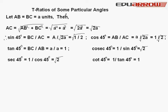We will study trigonometric ratios for 45 degree angle. Sin 45 degree is equal to 1 by root 2. Cos 45 degree is also equal to 1 by root 2. Tan 45 degree is equal to 1. Its reciprocal cot 45 degree is also 1. Sec 45 degree is equal to root 2 and cosec 45 is also equal to root 2.